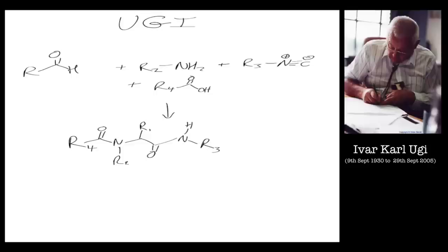Let me scroll down a little bit and explain it. We take an aldehyde with a primary amine, with an isonitrile, and a carboxylic acid. You basically throw all of them together in some solvent like methanol, something like that.